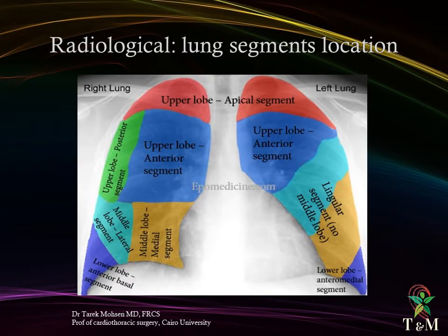Radiological lung segment locations: not all segments can be seen on the posterior-anterior view of chest x-ray. The upper lobes will show their apical segments, and on the right side a part of the posterior segment of the right upper lobe.